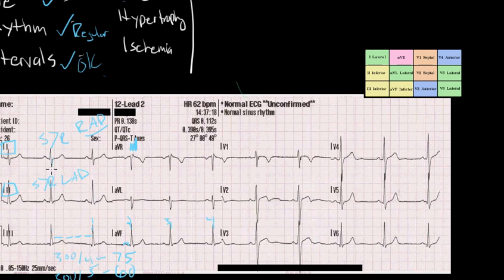So in our patient, our R waves are nice and high, bigger than our S waves, so we know we have a normal axis.